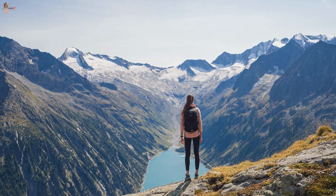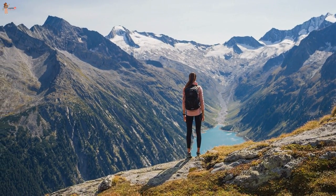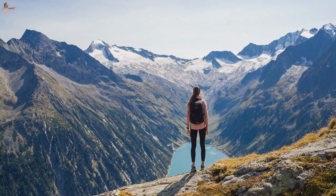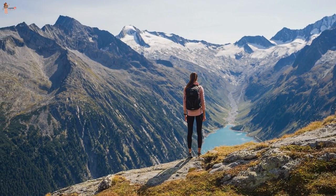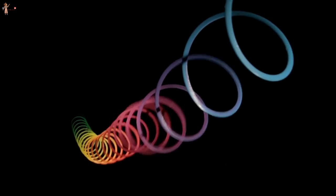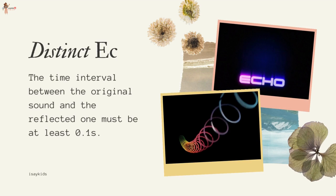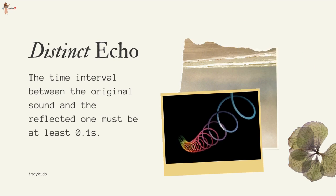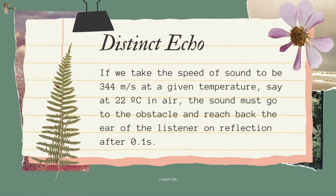Echo: If we shout or clap near a suitable reflecting object, such as a tall building or a mountain, we will hear the same sound again a little later — this sound is called an echo. The sensation of sound persists in our brain for about 0.1 seconds. To hear a distinct echo, the time interval between the original sound and the reflected one must be at least 0.1 seconds. If we take the speed of sound to be 344 m/s at 22°C, the sound must go to the obstacle and come back to the ear after 0.1 seconds.